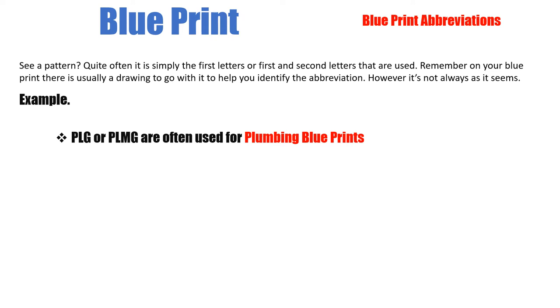But it's not always as it seems. PLG or PLMG are often used for plumbing blueprints. SHR or SHWR are used to identify shower. So you see they're not necessarily using the first letter or the first two, which would be S or SH.